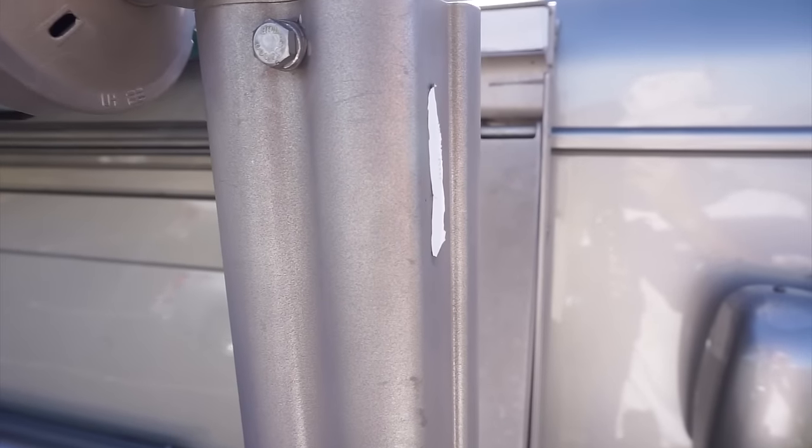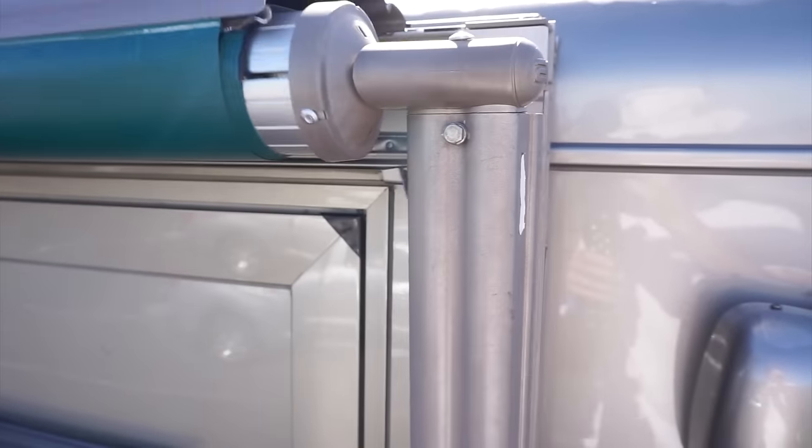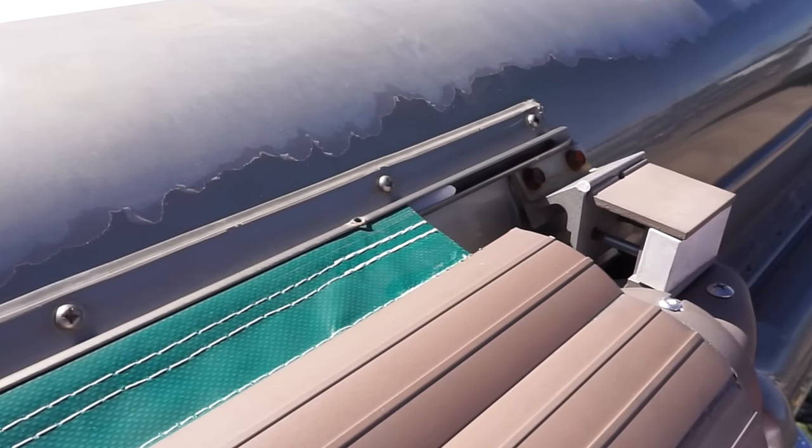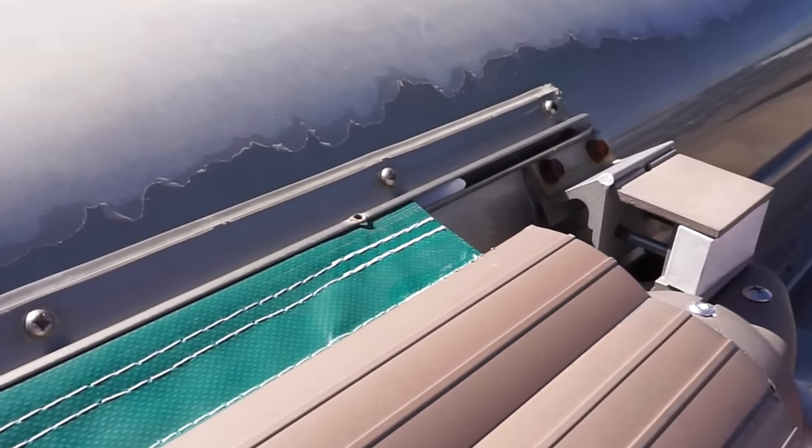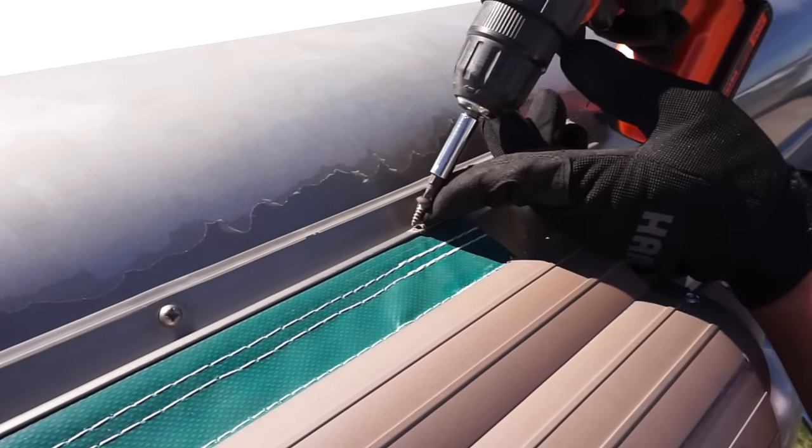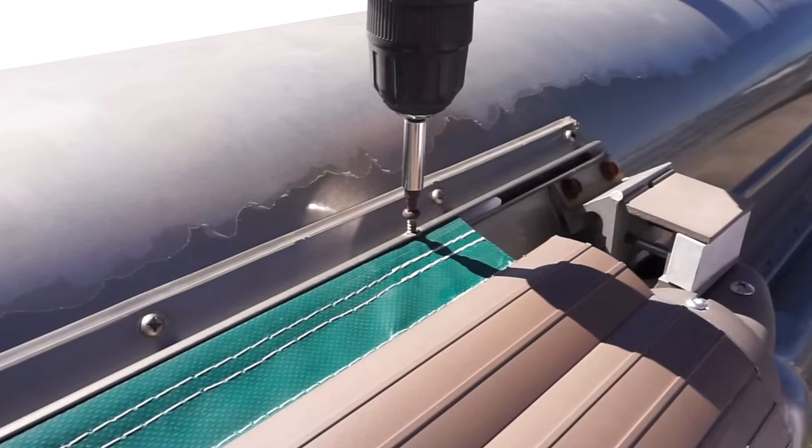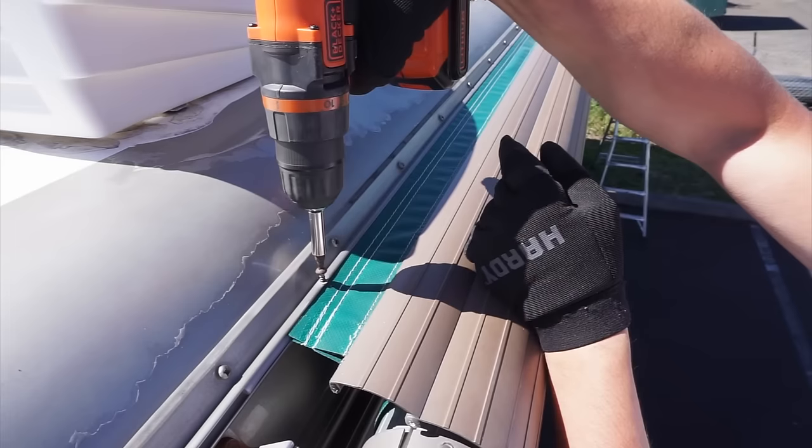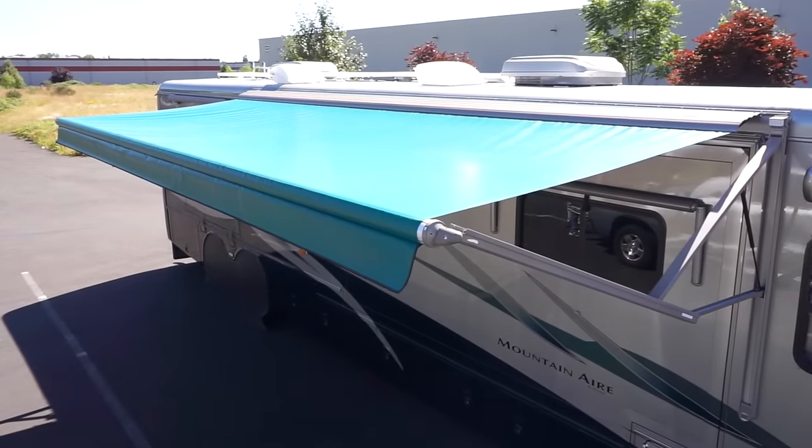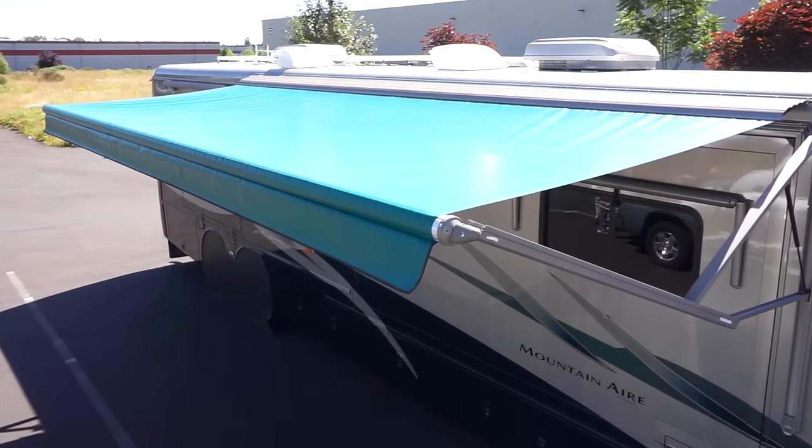When you close it, the arms should fall directly into place. If they don't, slide the fabric a little forward or backward on the side of the RV until they do. Once you've run the awning in and out a couple of times to confirm that everything is lined up, you can replace the two screws that keep the fabric from sliding out of place. You're now ready to enjoy many years of great service from your beautiful new awning.